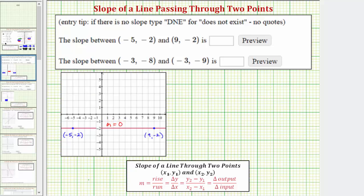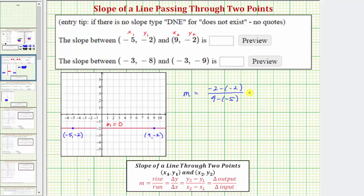Let's go ahead and verify this by using our slope formula. To keep things organized, let's call this first ordered pair x sub one comma y sub one, and the second ordered pair x sub two comma y sub two. So the slope m is equal to y sub two minus y sub one, which is negative two minus negative two, divided by x sub two minus x sub one. Simplifying, negative two minus negative two equals negative two plus two, which equals zero.